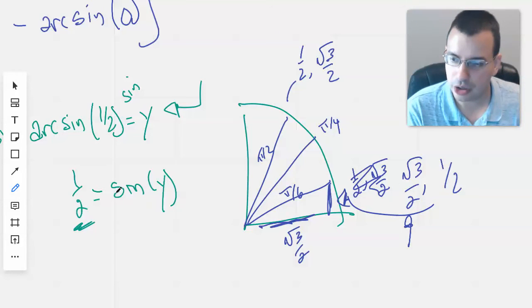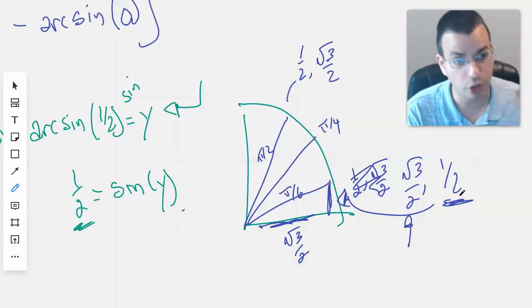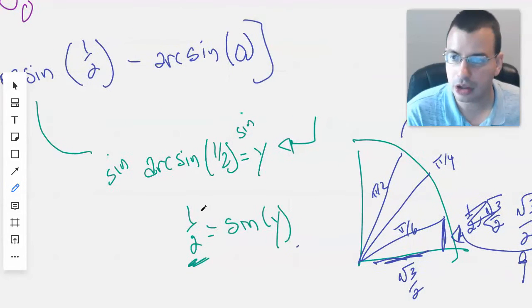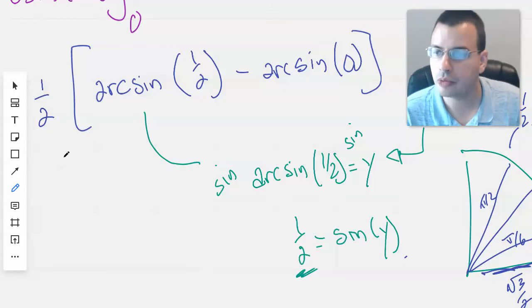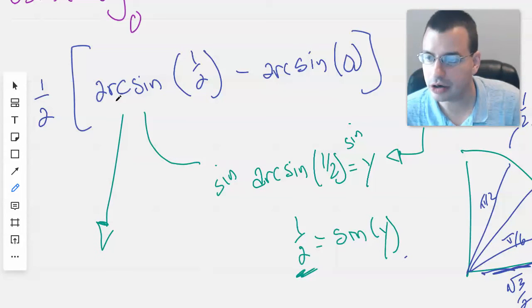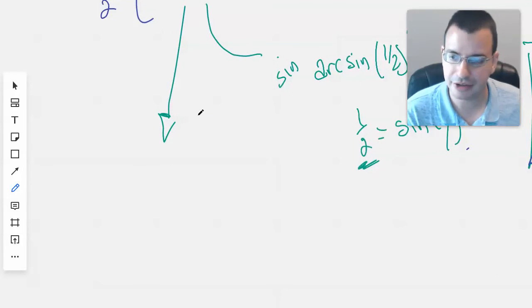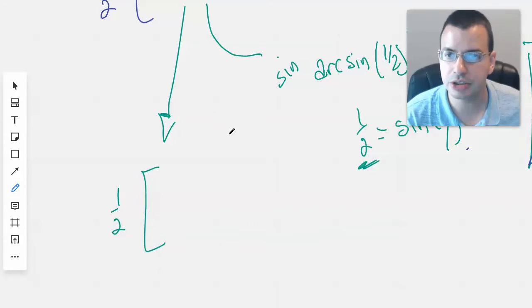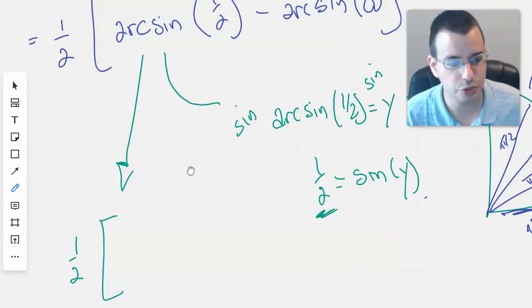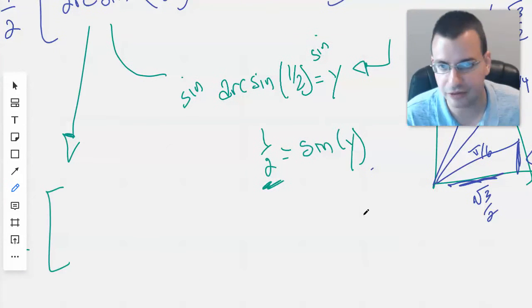So we want to find out where sine of y equals one half. So that's going to be pi over 6, because this is the sine value, the y value, if you will. So if we come back up here, green, this right there, arc sine of one half, this will be one half times arc sine of one half, which we now know is pi over 6.